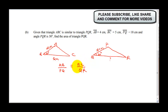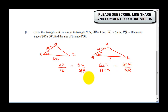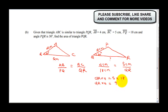We can now write: AB is 4 cm and PQ is 18 cm, so 4 over 18 equals 5 over QR. Cross-multiplying gives us QR times 4 equals 5 times 18, which equals 90.